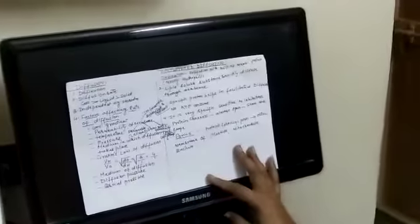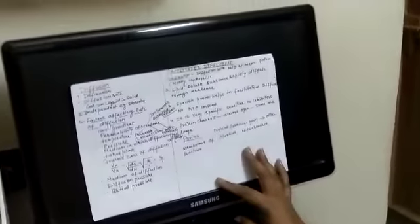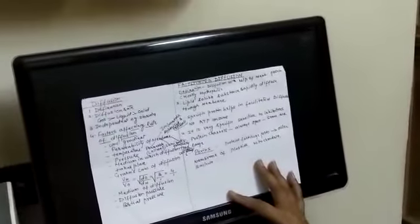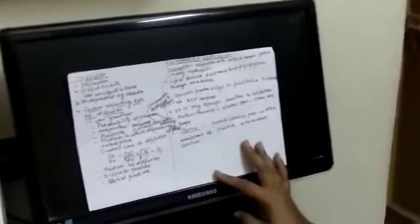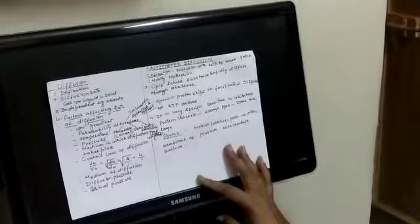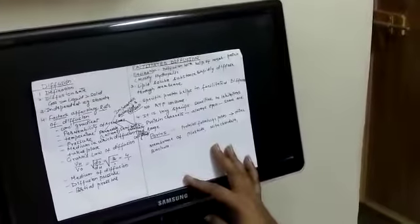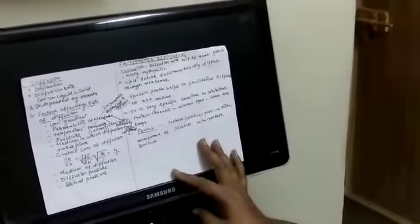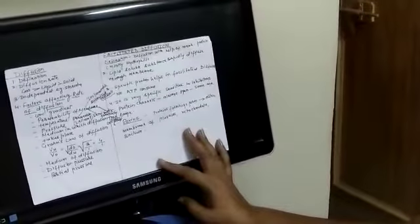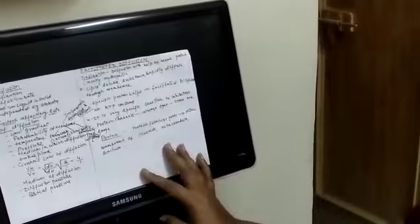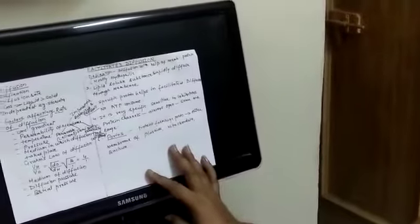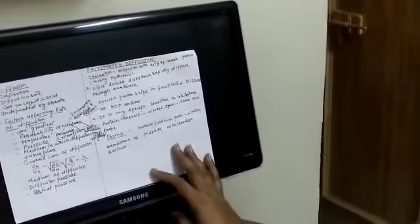And last is partial pressure. In stomata, diffusion of carbon dioxide and oxygen occurs independently of each other. So the pressure which is exerted by diffusion of carbon dioxide molecules is known as partial pressure. And also the diffusion pressure exerted by oxygen molecules is also known as its partial pressure.